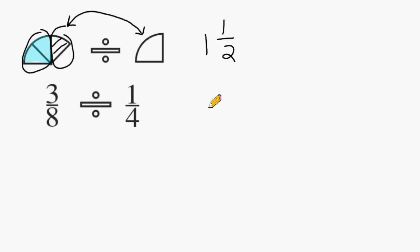Let's verify that our answer should be 1 and 1 half by applying the algorithm of fraction division, which is to keep the first fraction as it is, change our division sign to multiplication, and writing the reciprocal of the second fraction. So 1 fourth becomes 4 over 1.